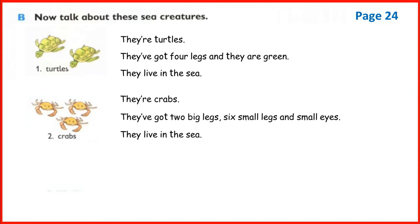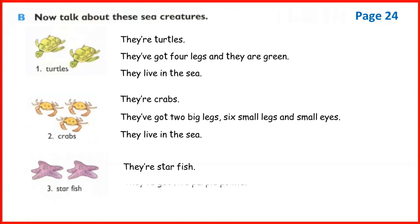Number three - what are these? Yes, they are starfish. It looks like a star. They've got five purple points - one, two, three, four, five. They live in the sea. Now repeat: they are starfish, they've got five purple points, they live in the sea. Good - they are starfish, they have got five purple points, they live in the sea.